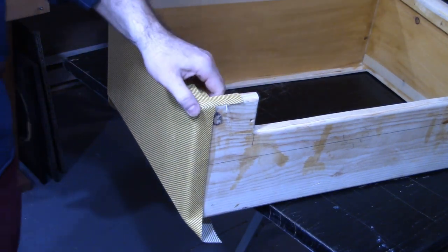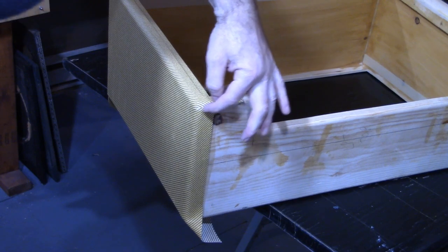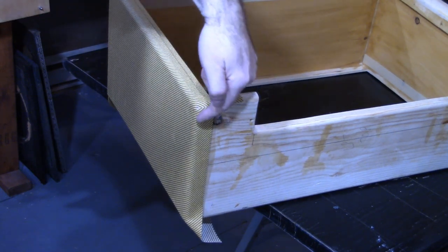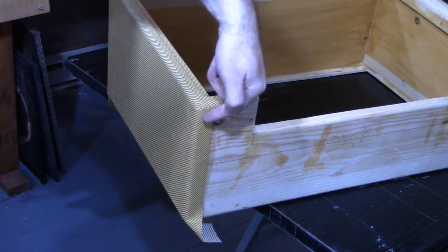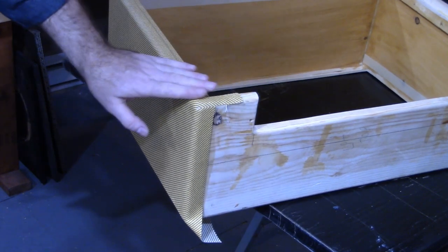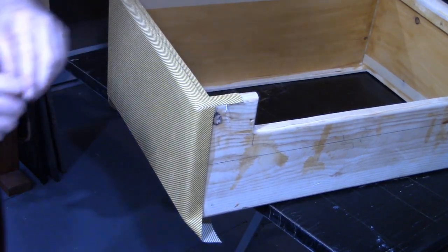Now at this point once I've got my corner down I should have no gap there. If I'm using tweed I make sure the pattern of my tweed lines up which it does. That's the point of having everything cut nice and square.